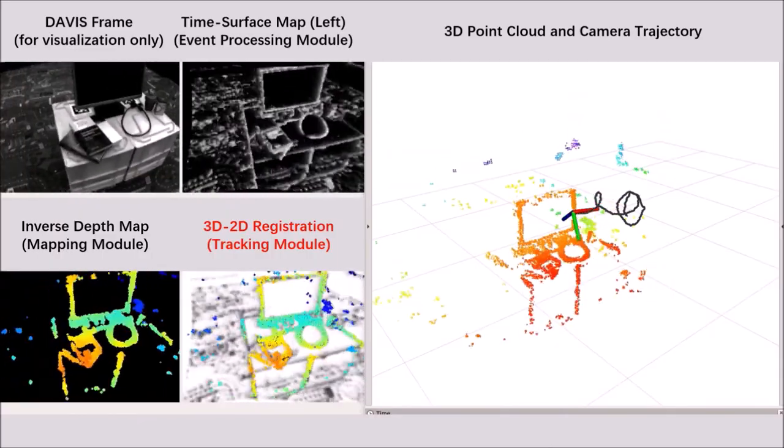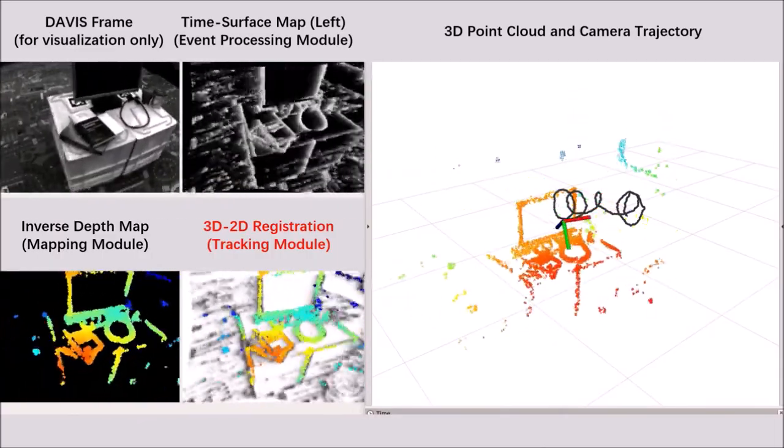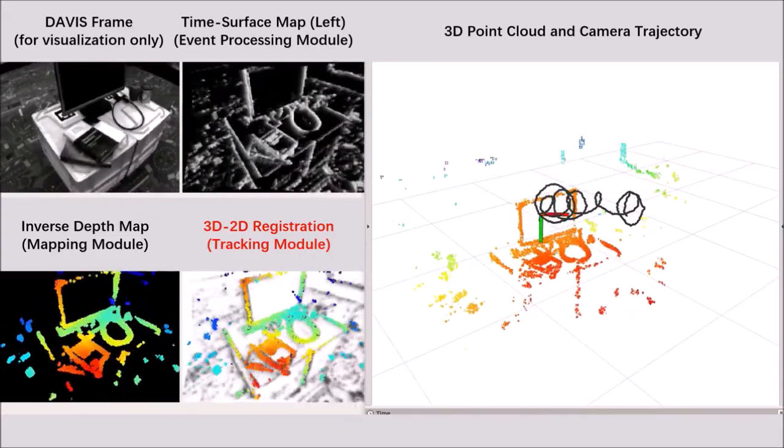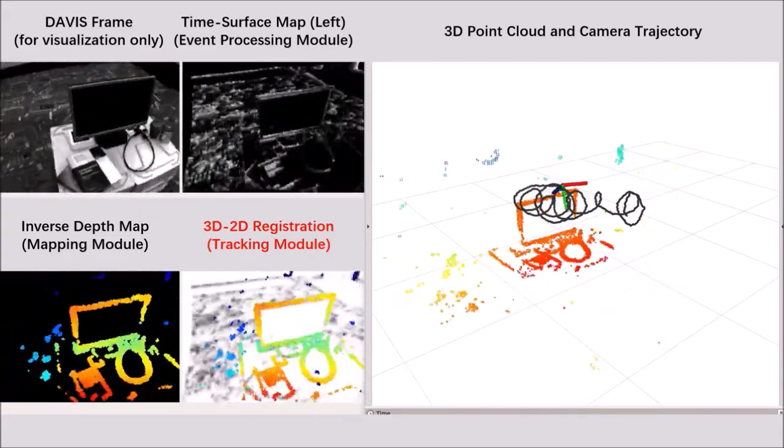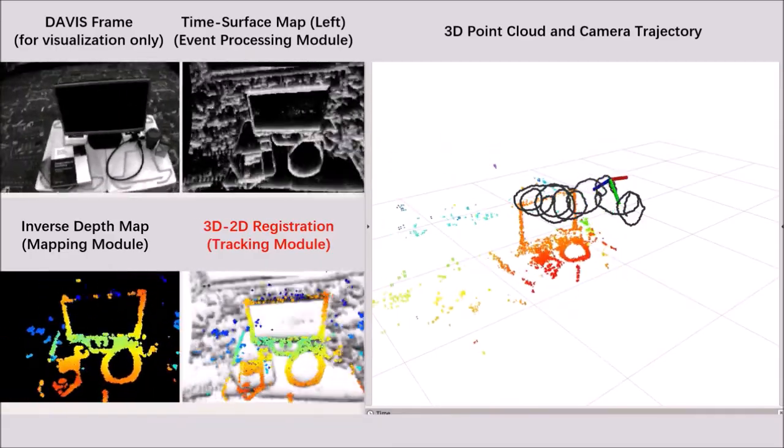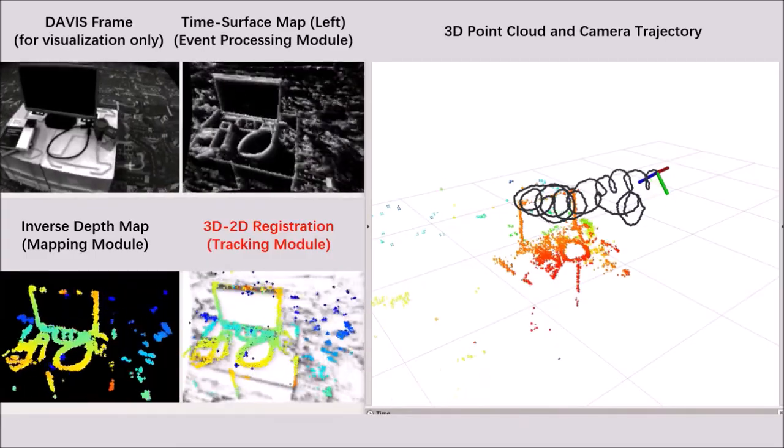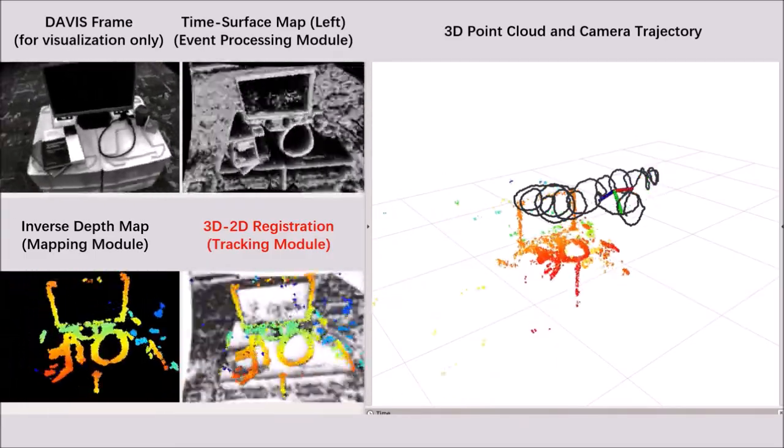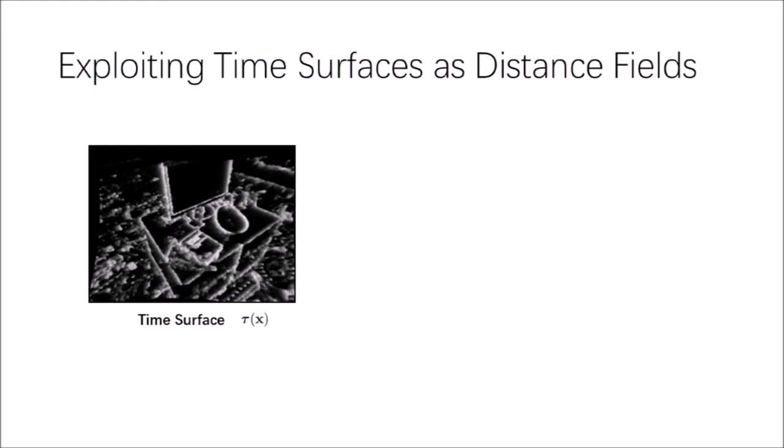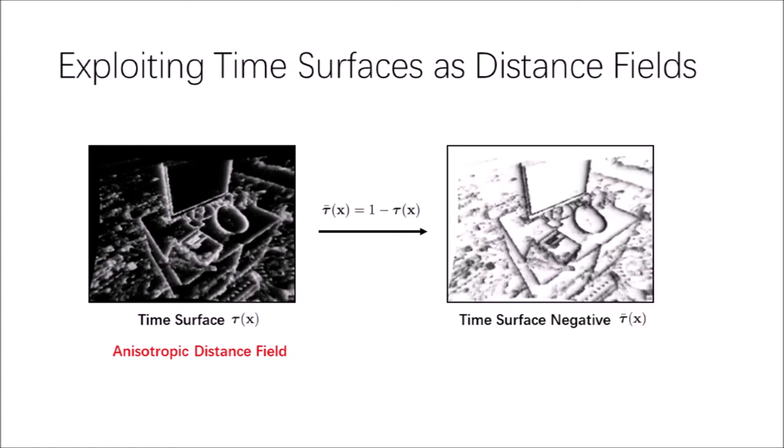The goal of event-based tracking is to estimate the pose of the left camera in the current stereo observation with respect to a reference depth map. To fully take advantage of time surface maps, we present a novel tracking method based on global image-like registration using time surface negatives. Time surfaces preserve the motion history of the edges due to the exponential decay applied in the generation procedure. This can be interpreted as an anisotropic distance field. To formulate the registration problem as a minimum optimization problem rather than a maximum one, we propose the idea of time surface negative, which is defined as this.